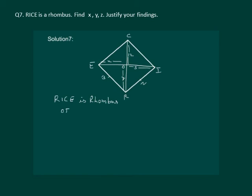That means OI will be equal to OE, and OI is given as 5 units, that means OE is also 5 units. That is we have X is equal to 5, and we will give the justification that diagonals bisect.